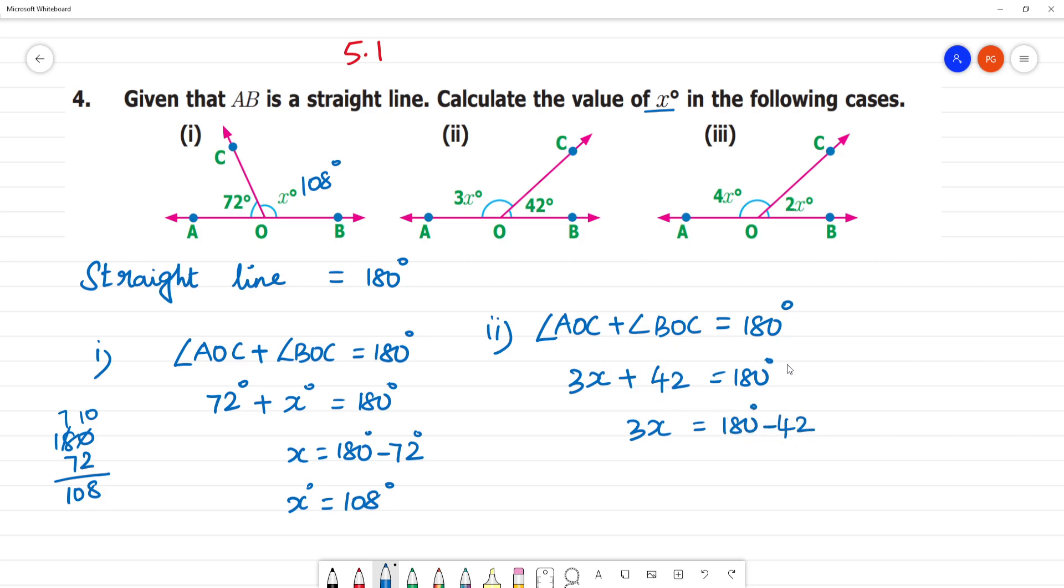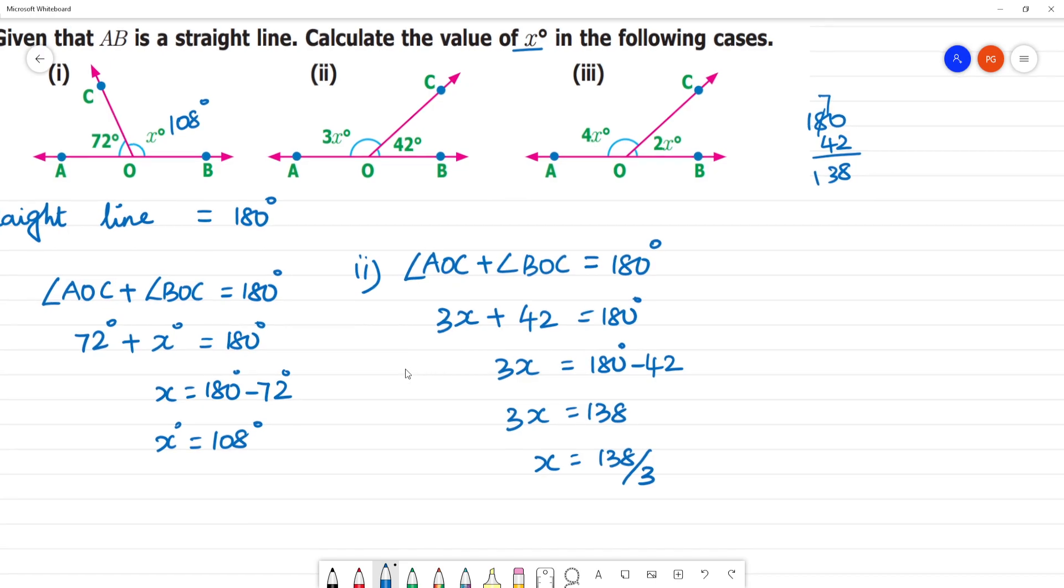3x plus 42 equals 180. Then 3x equals 180 minus 42, which equals 138. So x equals 138 divided by 3. 3 times 4 is 12, remainder 1, then 18, 6 times 3 is 18. So x is equal to 46 degrees.